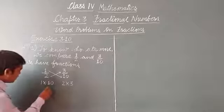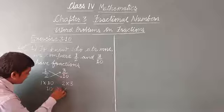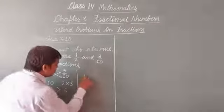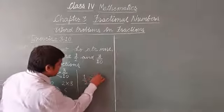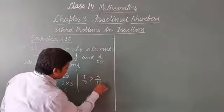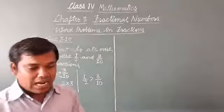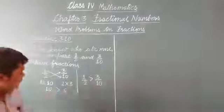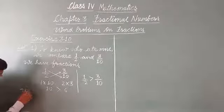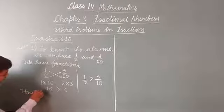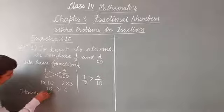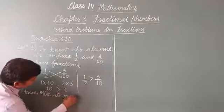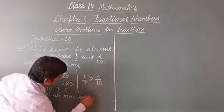So 1 × 10 on this side and 2 × 3 on this side. We get 10 and 6. Since 10 is greater than 6, it means 1/2 is greater than 3/10. Hence Mickey ate more sweet.